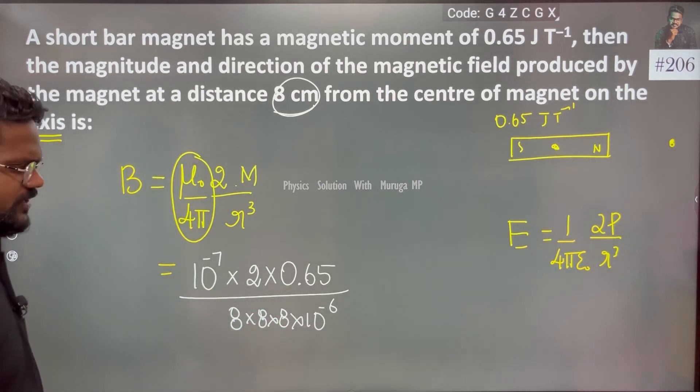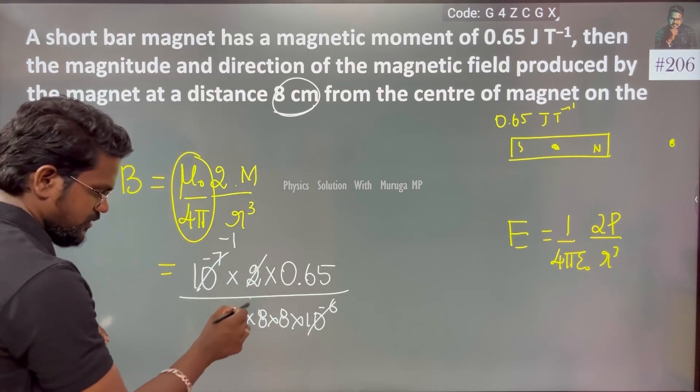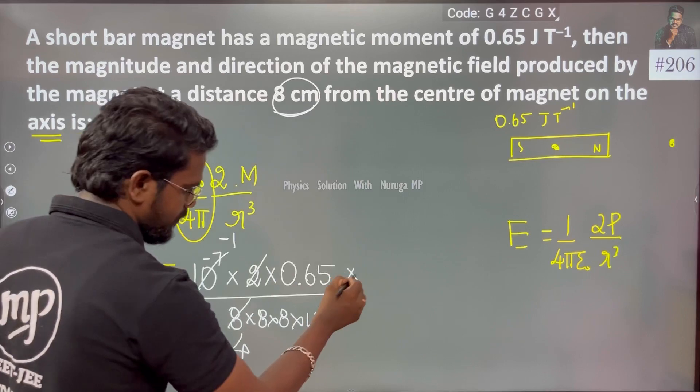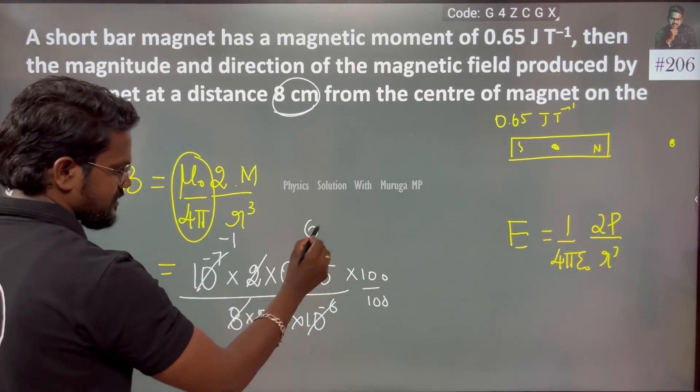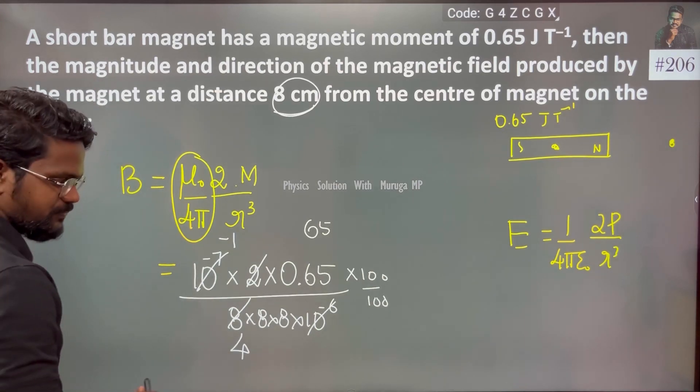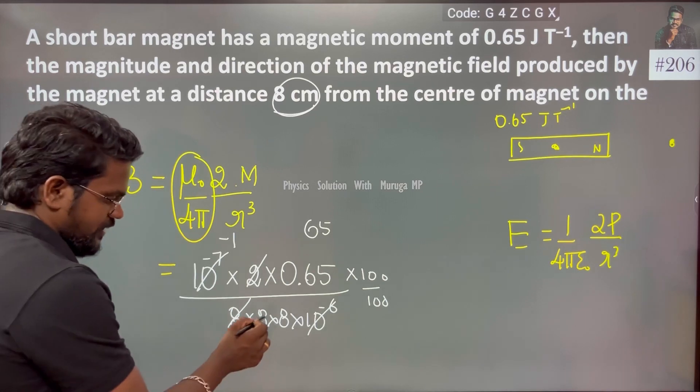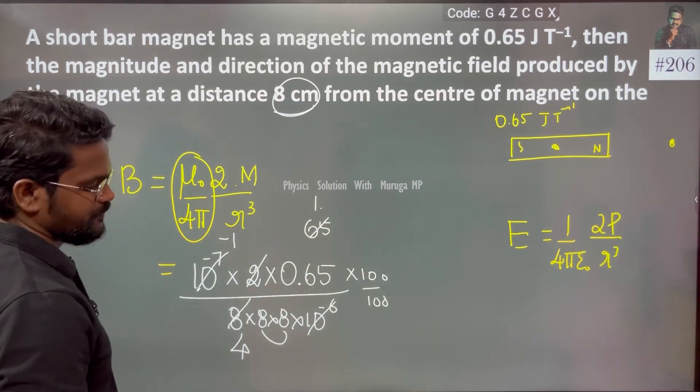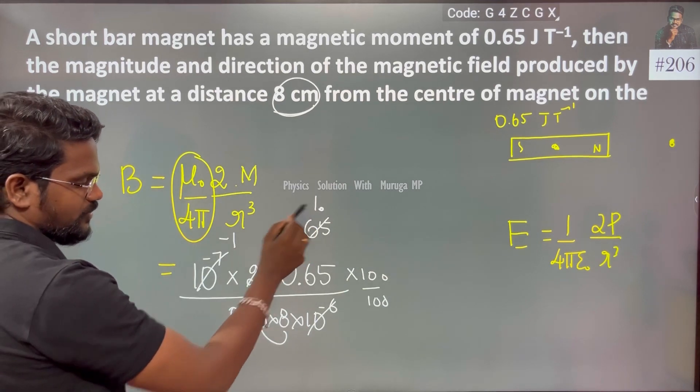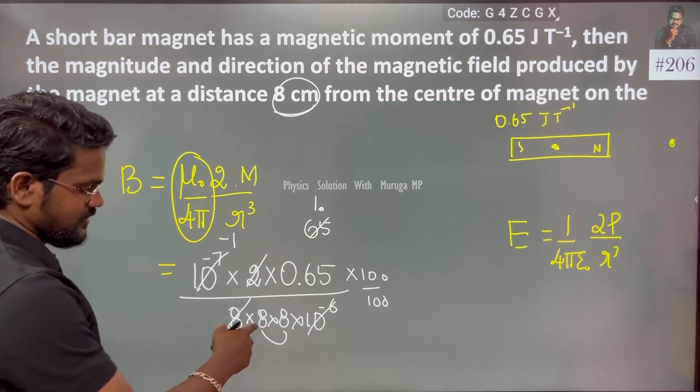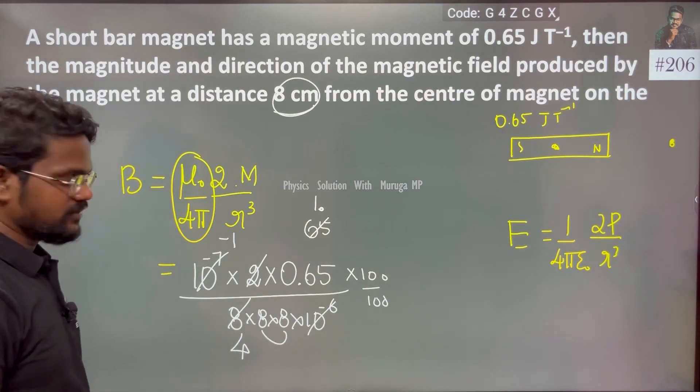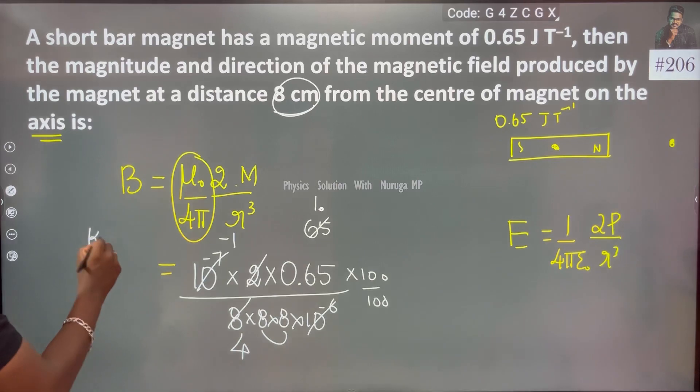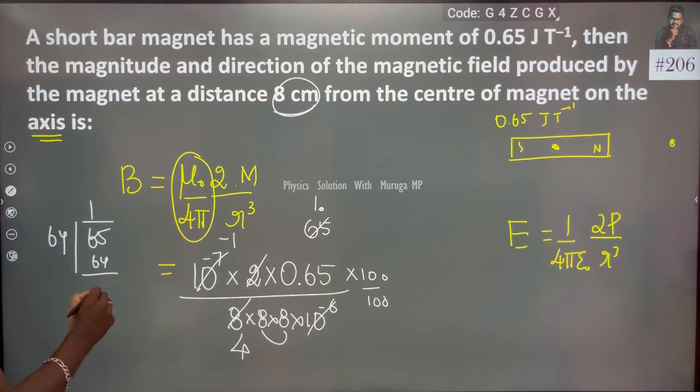We will solve it very simple. Obviously we have 4 times, so if we multiply with the 100 this becomes 65. 65 in regular division 100, 64. Obviously this one point something value correct. Either 64 or 65, so 1.01. 65 divided by 64 one time is 64, one point which is 0 goes 0.